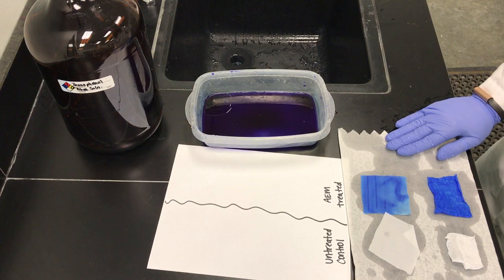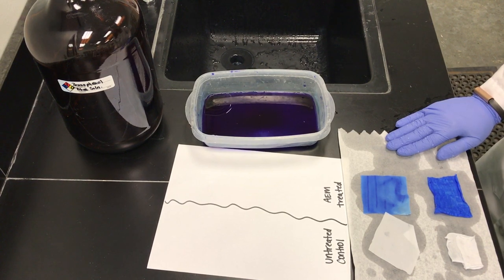The BPB staining can only determine if there is a cationic presence on the surface of the fabric. It does not validate any antimicrobial efficacy.